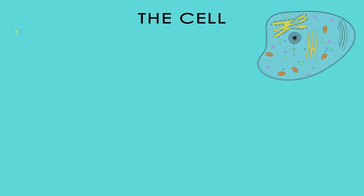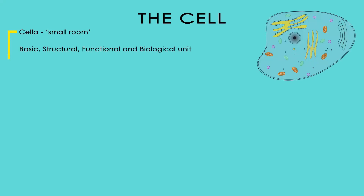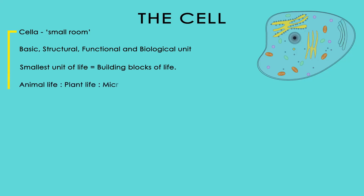The first thing is: what is a cell? In Latin, 'cella' means small room. The cell is the basic structural, functional, and biological unit of all known organisms. A cell is the smallest unit of life. Cells are often called the building blocks of life. Organisms are divided into three categories: animal life, plant life, and microbial life.